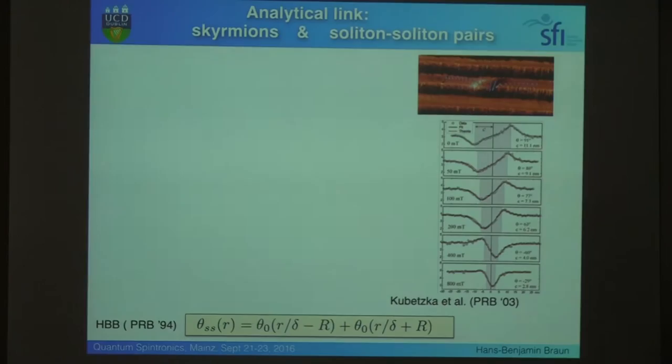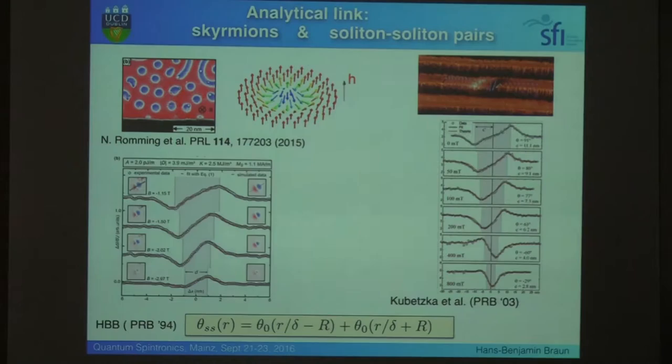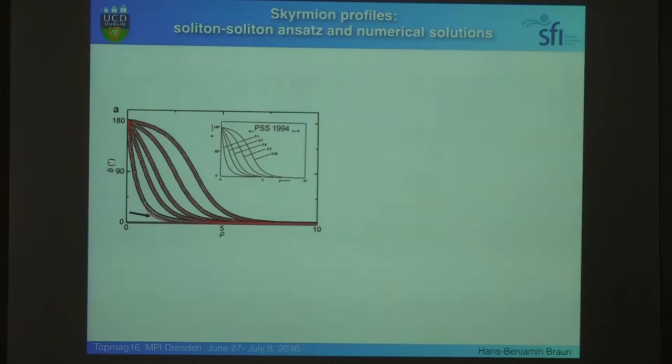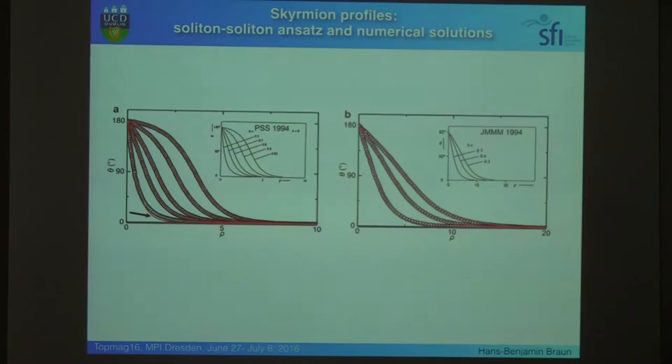But this profile also describes the radial dependence within a skyrmion very well. So, in a certain sense, this is like a Swiss army knife, you know, you can use it for a 2π domain wall, and you can use it for a skyrmion. So, this is now this ansatz, superimposed to the original numerical solutions of Bogdanov in 94. Incidentally, two things appeared in 94, this analytical solution, and his numerical work. So, with two parameters, you can fit all of their numerical results.